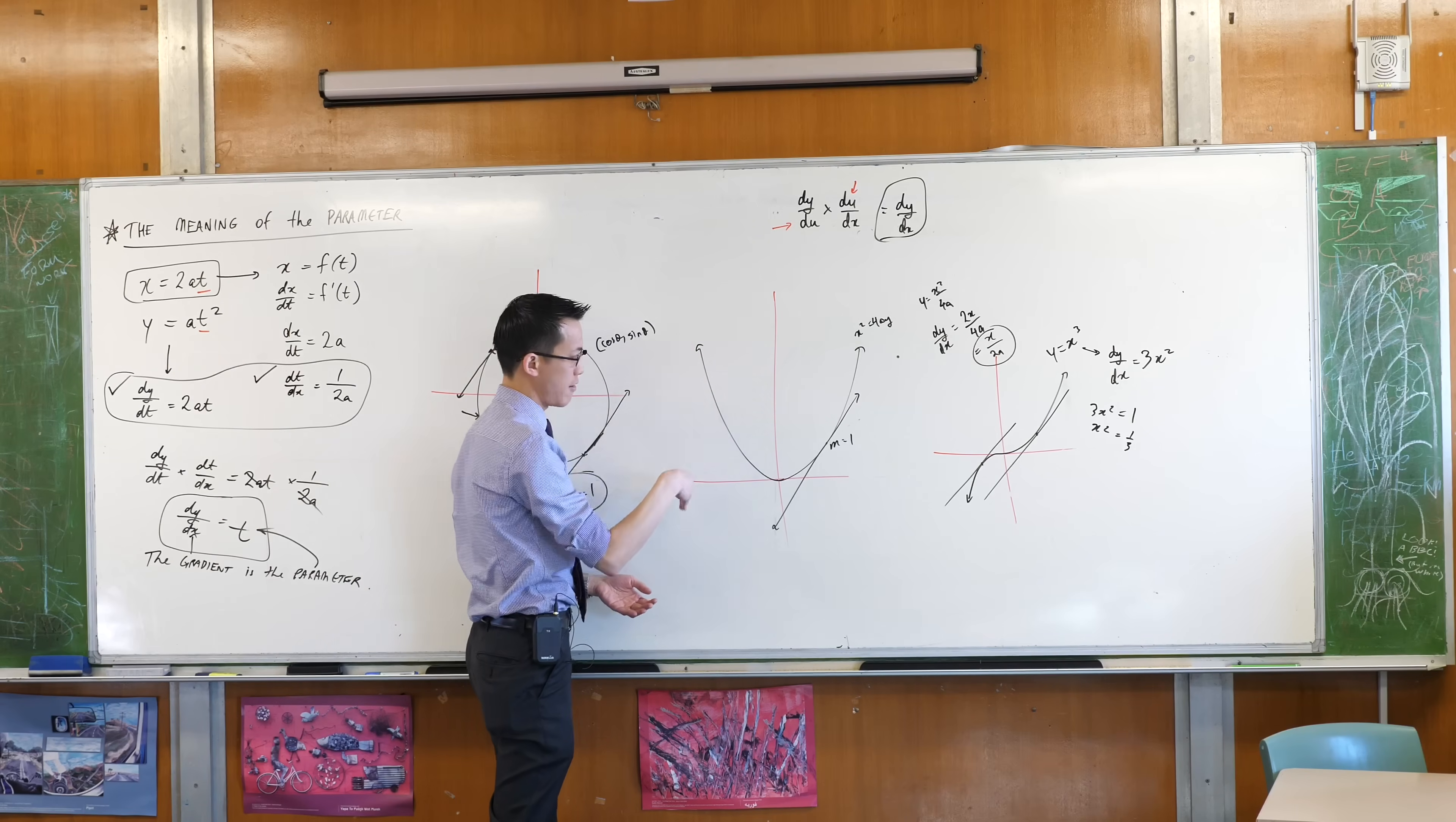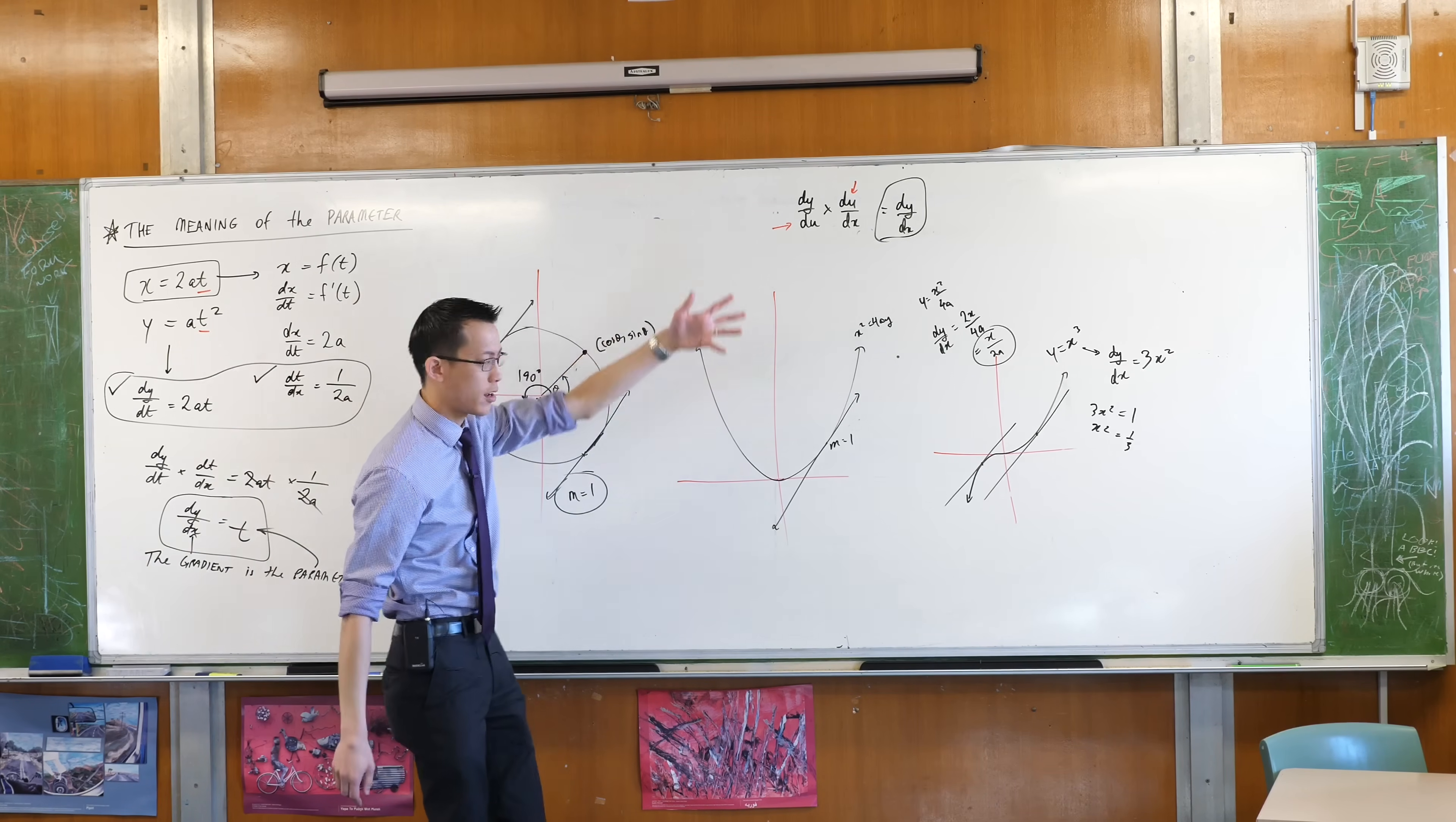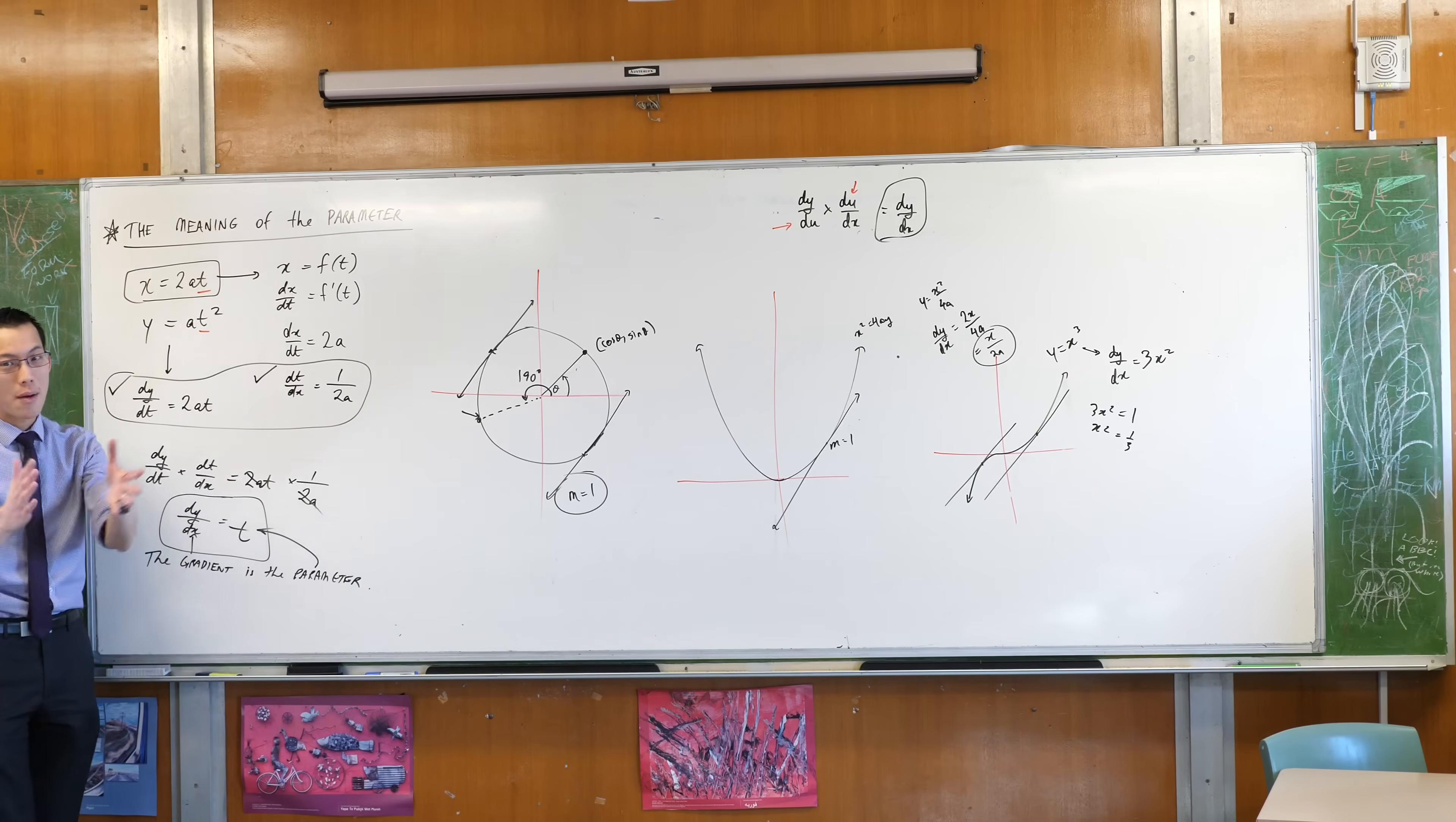Well, it's going to be somewhere on this side, right? Because it's negative, and it's going to be a steep one, so somewhere further up the curve. So that's why we choose this as the parameter for the parabola.